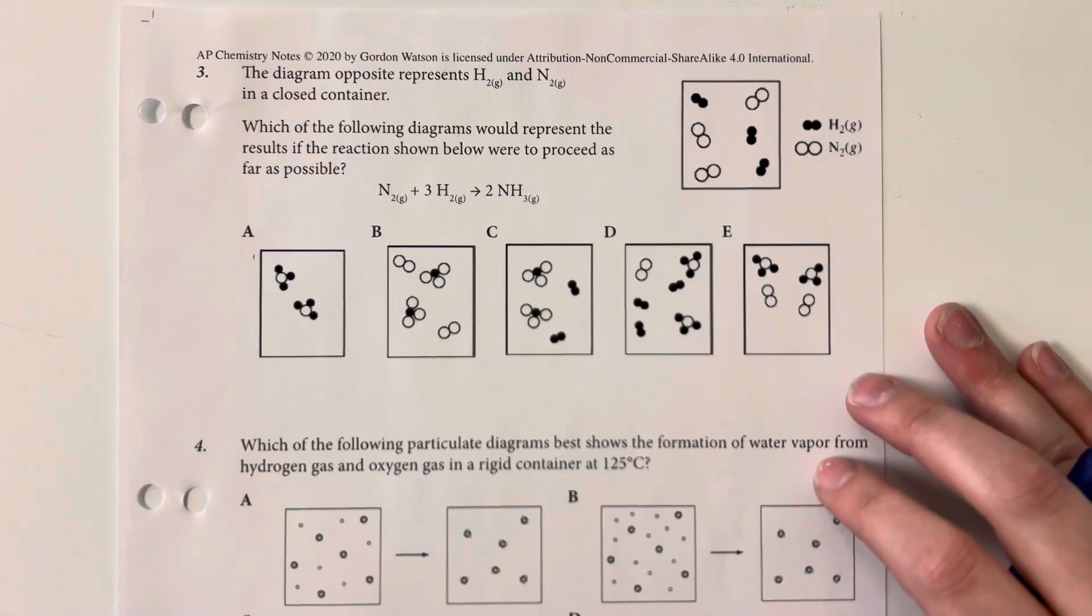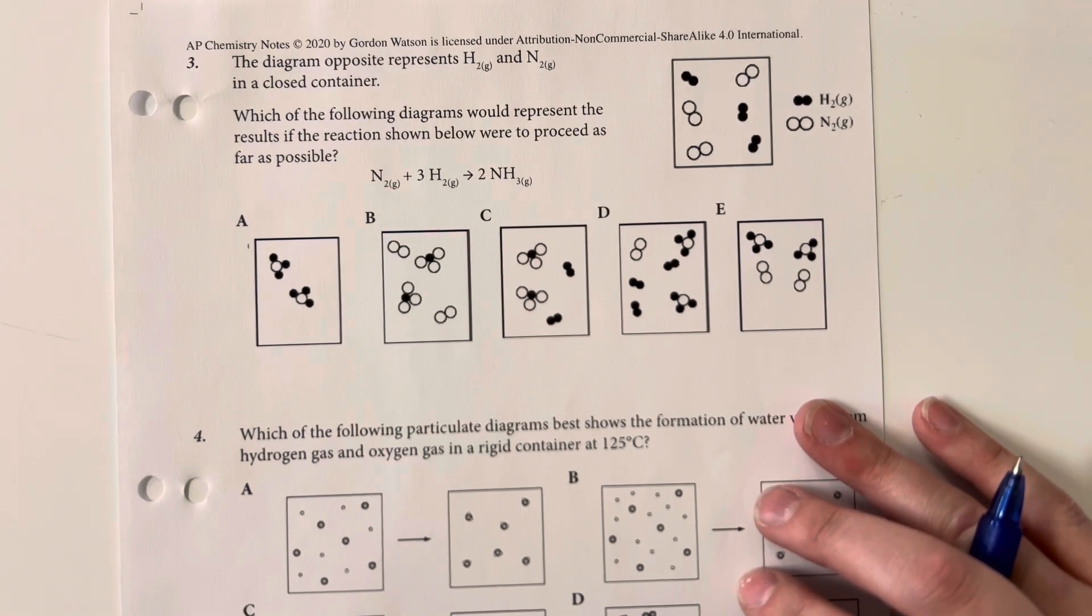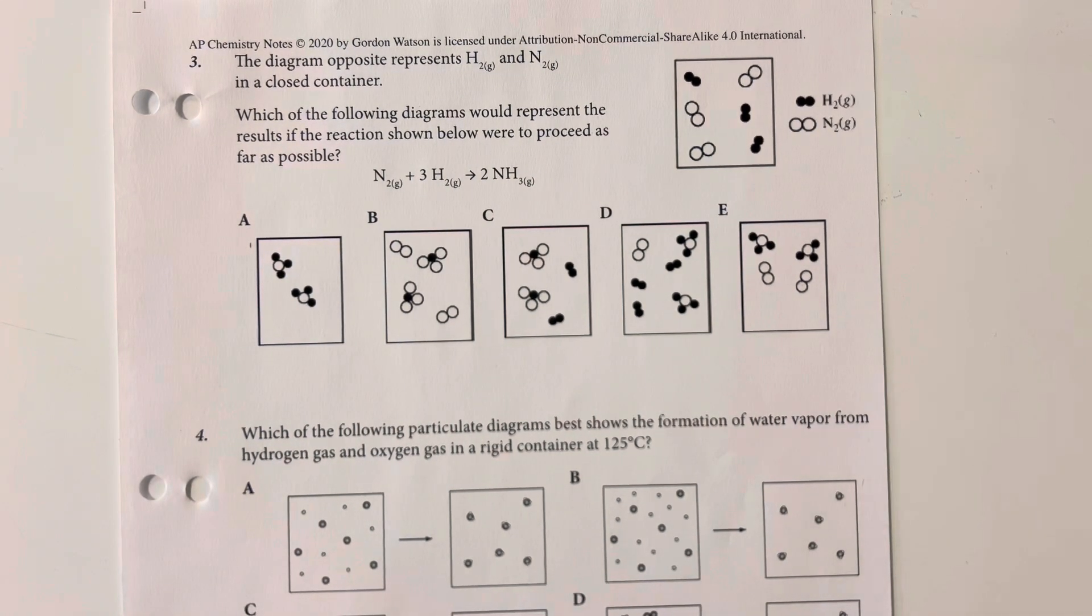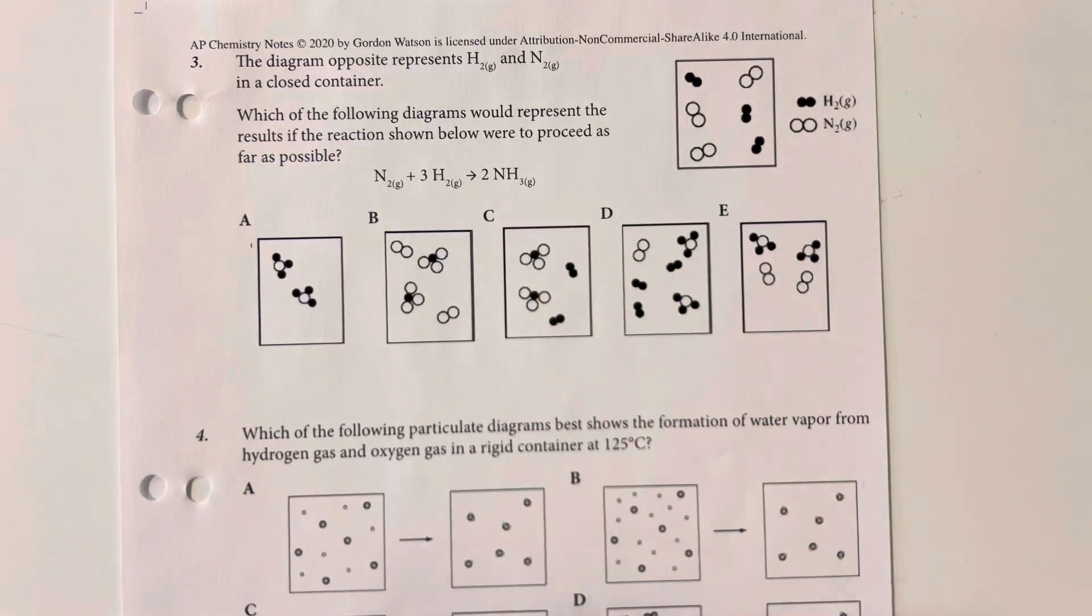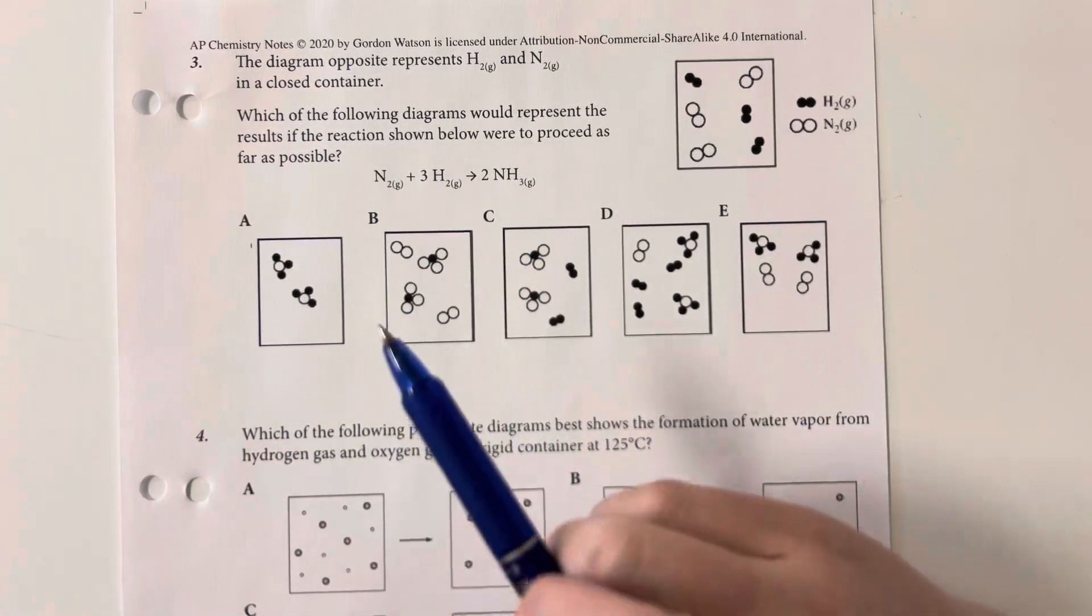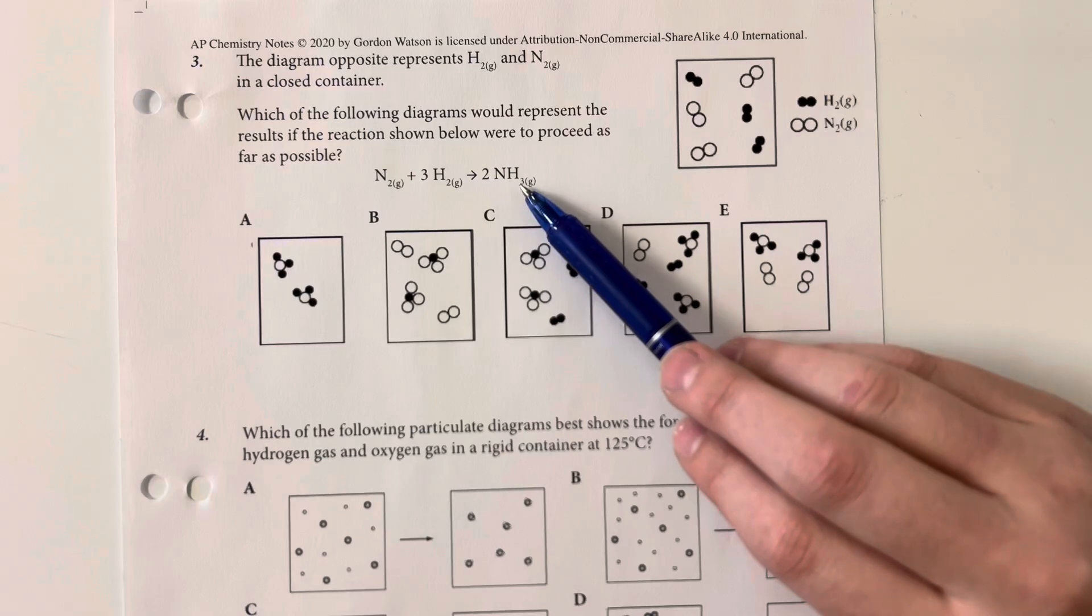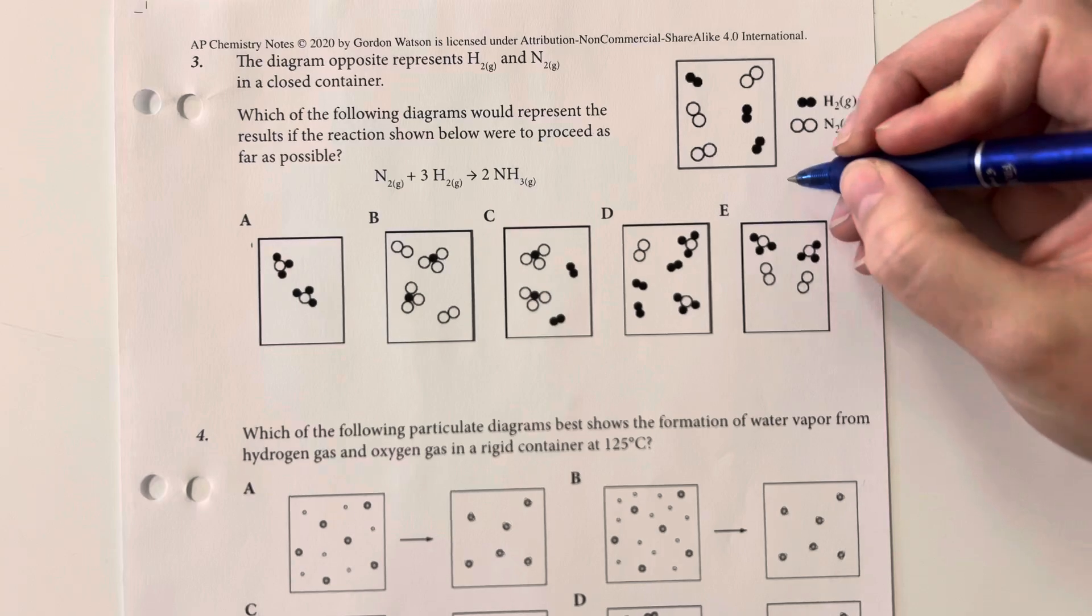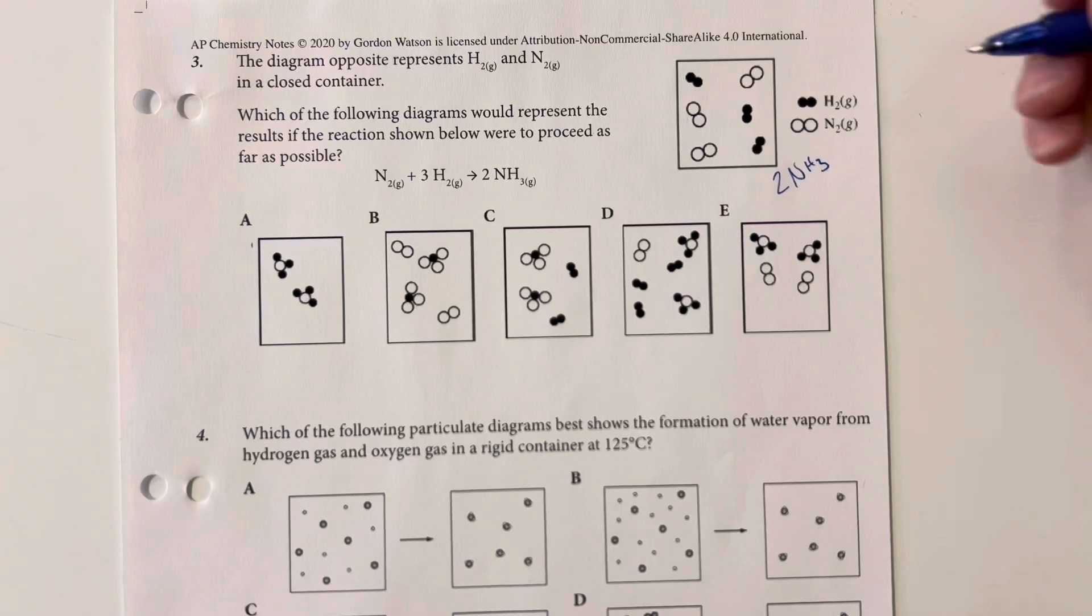The diagram opposite represents hydrogen gas and nitrogen gas in a closed container. Which of the following diagrams would represent the results of the reaction below were to proceed as far as possible? So we have nitrogen plus hydrogen going to ammonia. We are very much looking for the limiting reagent here, so if I need three hydrogens for every one nitrogen in the end, and I have six, then that means that I can only create two ammonias.